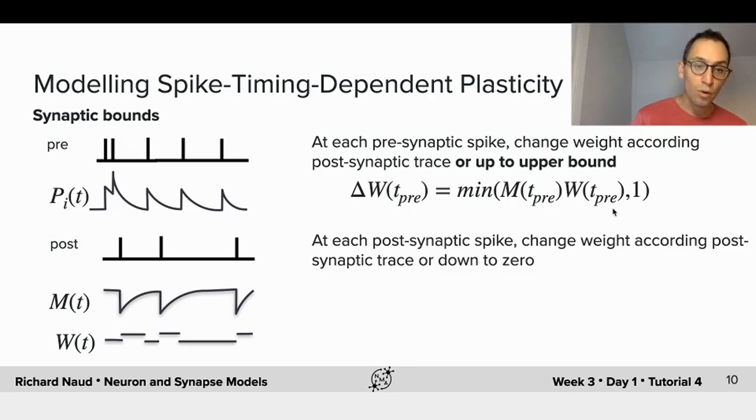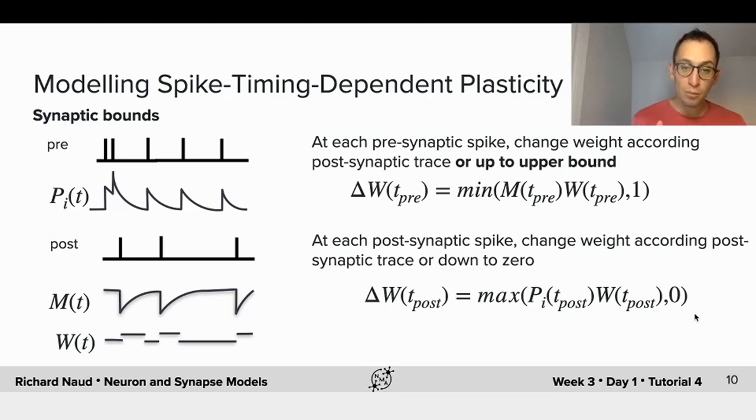Similarly, when a post-synaptic spike comes, and we would normally implement some depression, we will take the maximum value between what we'd like to do, according to the synaptic traces, and 0. This way we're bound between 0 and 1.